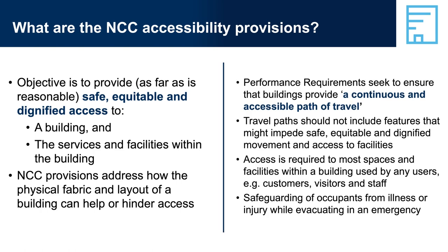Access objectives also include the services and facilities within the building, and to safeguard occupants from illness or injury while evacuating in an emergency. Examples of adhering to the access principles include: accessible entry to a new building must be the principal pedestrian entrance and not one around the back of the building; gaining access to a swimming pool should not rely on someone having to be carried into it. Access is required to most spaces and facilities within a building used by the occupants, who may be customers, visitors or staff.